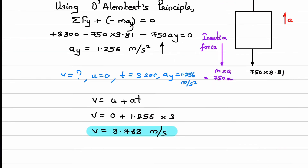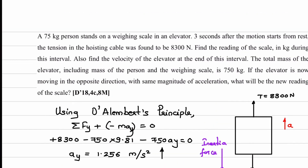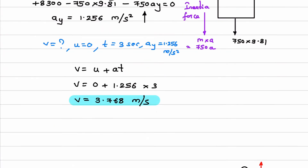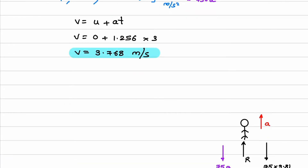Next question: it is also asked to calculate the reading of the scale in kg during this interval. The lift is moving in the upward direction and we have to calculate what is the reading on the weighing scale in kg. So: reading on weighing scale if elevator moves upward.